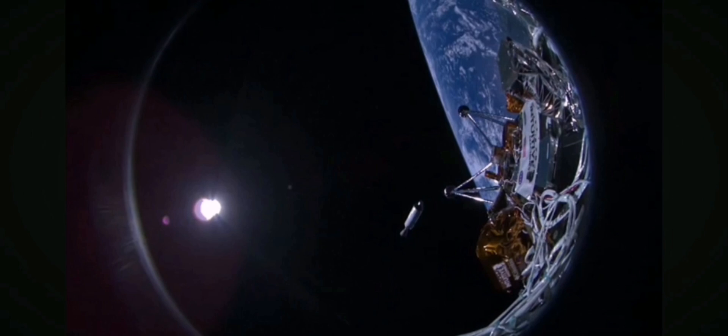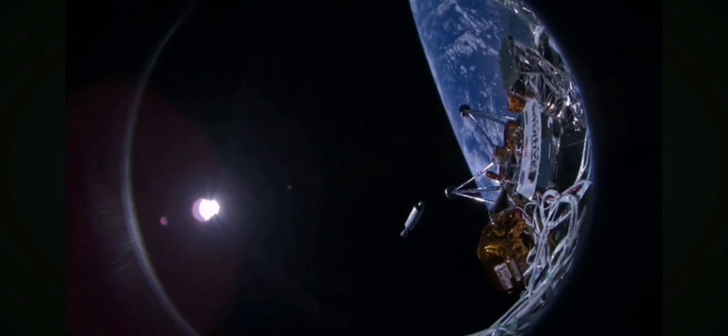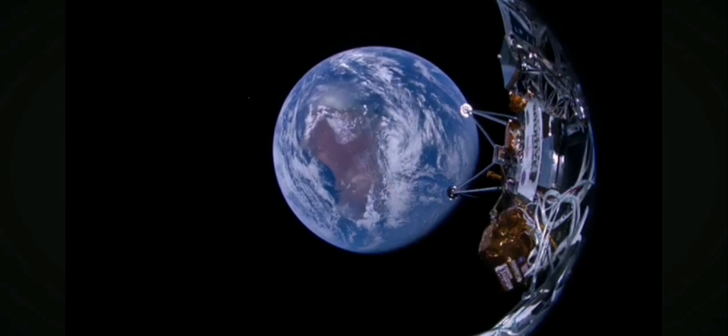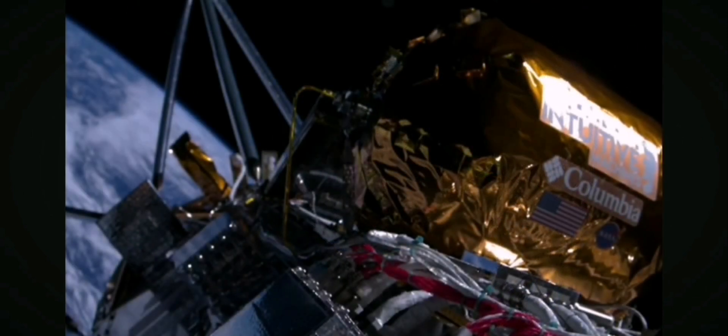Yesterday, Intuitive Machines published the first IM-1 images capturing our home as the lander drifted away towards the moon. These images are only a few of what our Nova C-class lunar lander actually sent to Houston. It takes a lot of planning, work, and a little bit of luck to get images like these.